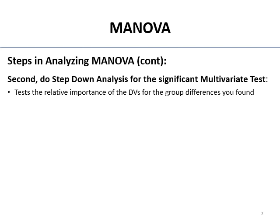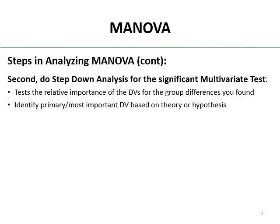Step-down analysis after a significant multivariate test looks for the relative importance of the DVs in the group differences you found. The groups differ on the DVs combined — but is one of these more important than the other? You want to identify your most important or primary DV based on your theory or hypothesis. Civic obligation being the more important DV, for example. Then you order the remaining DVs from second most important onward.